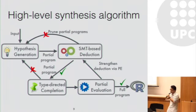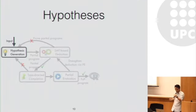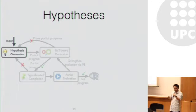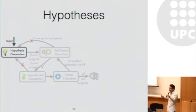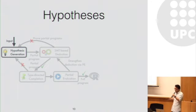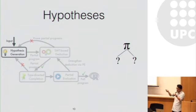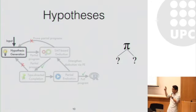Let's get started with hypothesis generation. Each hypothesis corresponds to a partial program that represents the high-level structure of a program. Our system enumerates hypotheses according to a certain cost metric — for instance, number of AST nodes or according to some statistical model. For example, we can have a hypothesis which contains only the projection operator, where the question marks correspond to the missing arguments for the table and the name of the column.